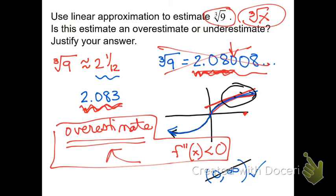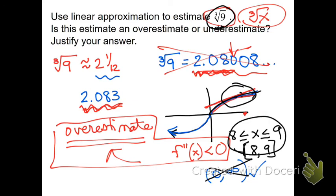So the other way to write it is, it's negative when x is between my point of tangency was 8 and the number I plugged in, which was 9. Or from 8 to 9. So you have to either state the entire interval where it's negative, the second derivative, or just write that it's negative from the point of tangency to the point that you plugged in.